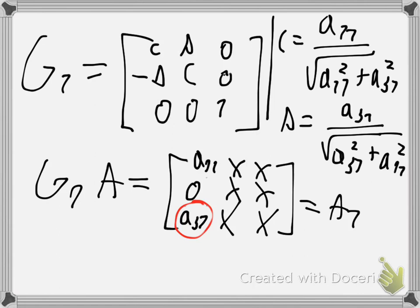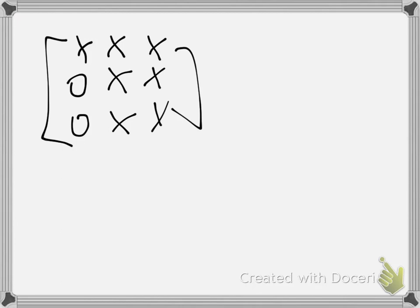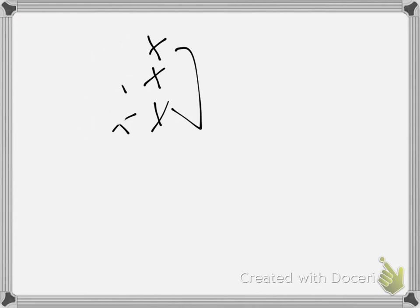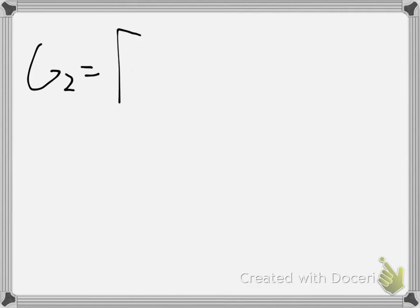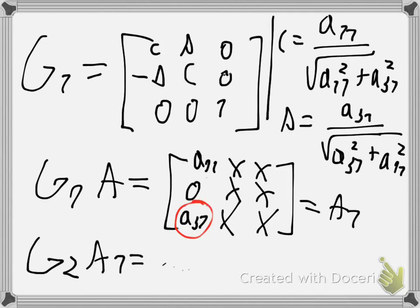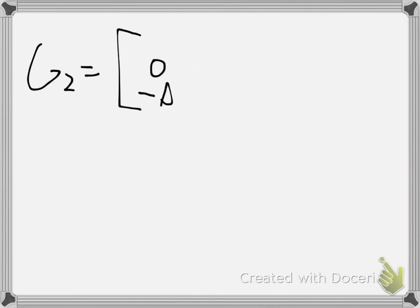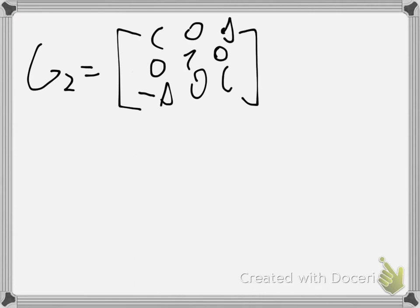After you applied your first rotation — let's call the result A1 — you apply J2 to A1 and get another result. J2 will have the following structure: remember the minus sign will be in the position of the element we want to eliminate. So the rotation matrix has the following structure, with the minus sign always in the place of the element we want to eliminate.